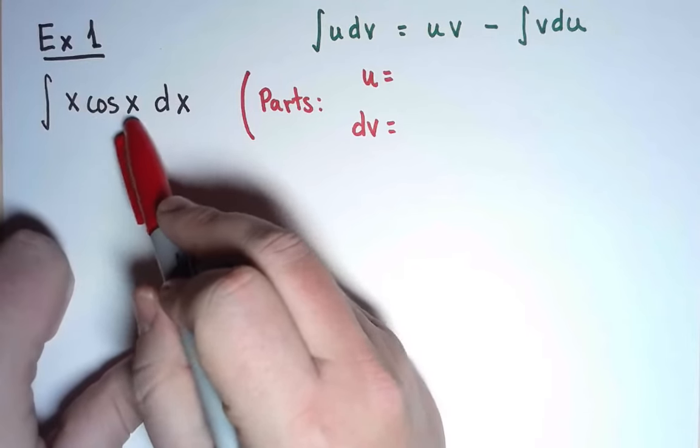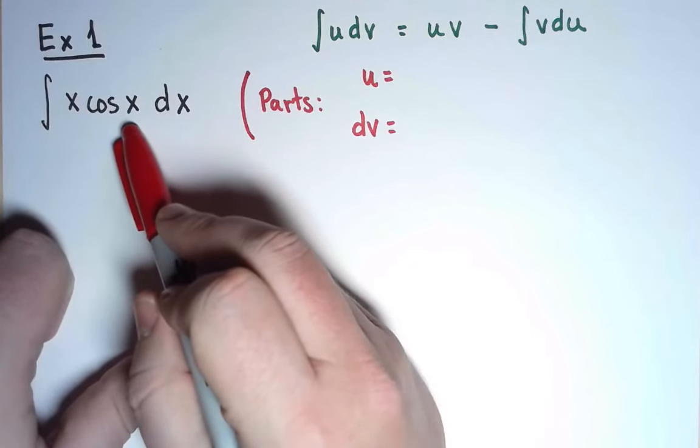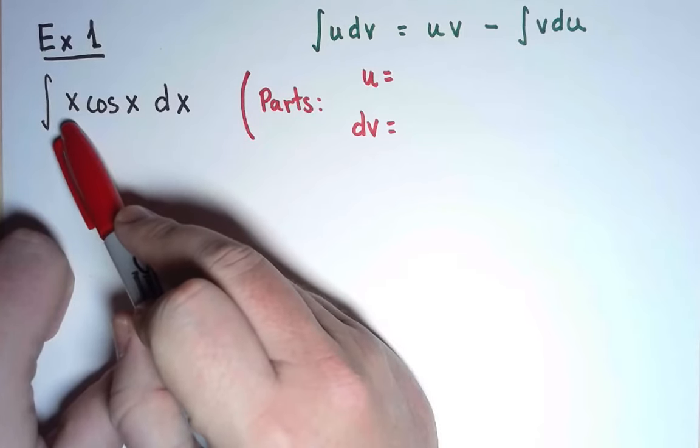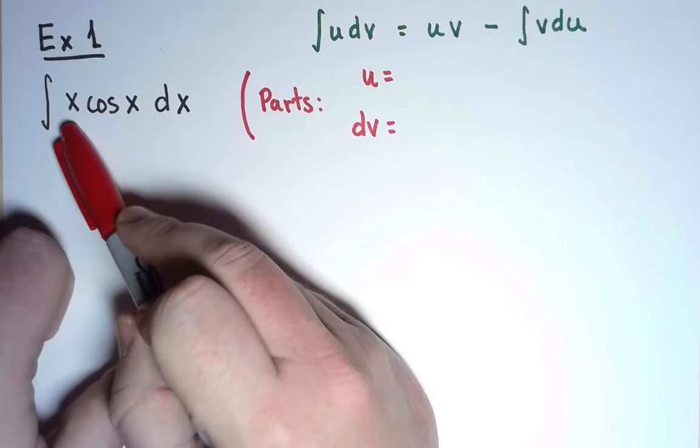For cos x, both derivative and antiderivative are plus or minus sine. Doesn't matter. But for x, it matters. The derivative is 1, which is simpler. The antiderivative is x squared times a constant, which is harder.